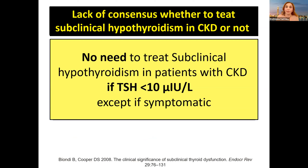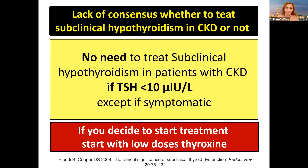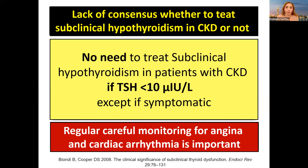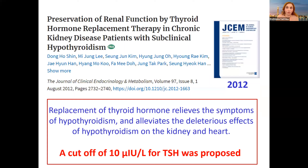Most references agree there is no need to treat subclinical hypothyroidism in patients with chronic kidney disease, except if TSH is more than 10 or if the patient is symptomatic. If you decide to start treatment, begin with a very low dose — not more than 25 micrograms per day — and monitor for angina and cardiac arrhythmia. A cut-off of TSH 10 has been proposed for starting treatment in children with chronic kidney disease.